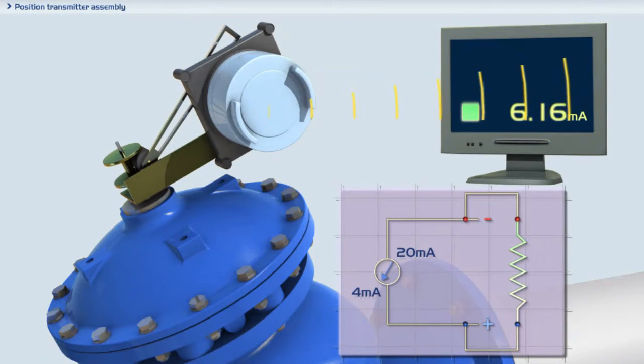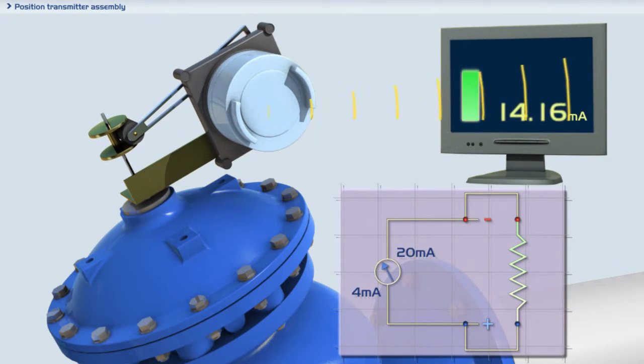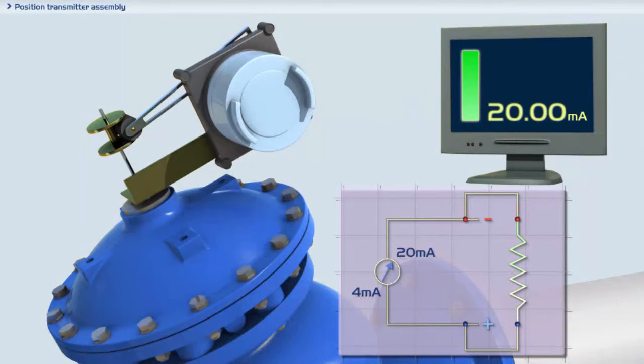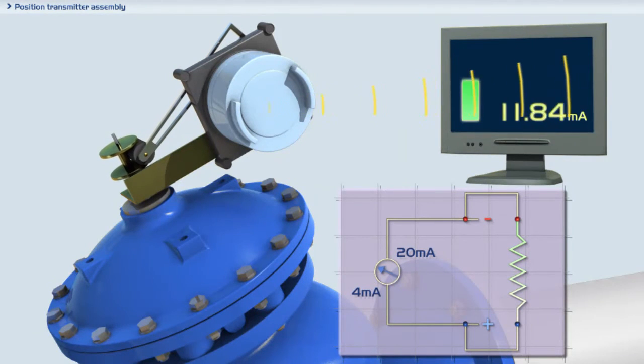The valve position transmitter assembly converts the exact position of the Bermod 700 series valve to a 4 to 20 milliampere current output, transmitting it to a control system, thus allowing for complex smart valve control and regulation.